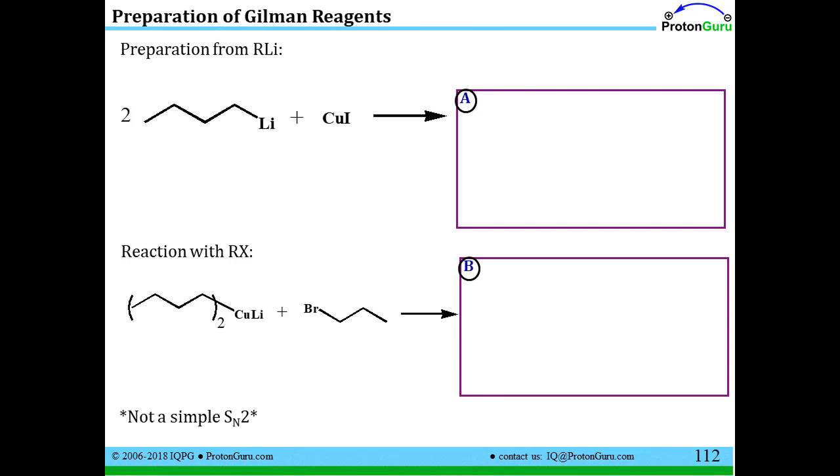In our last lesson, we learned how to prepare organolithium reagents, Grignard reagents, and Gilman reagents. We talked about the very first of these reactions that Gilman reagents can do to substitute a bromine on an alkyl group. We also learned that this is not a simple SN2 reaction. We talked about how the stereoretention is one piece of evidence to support the fact this is not a simple SN2 reaction.